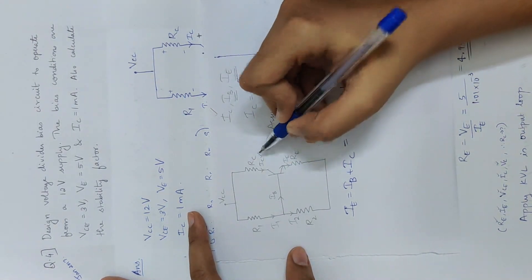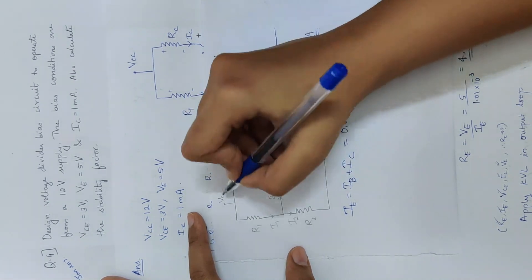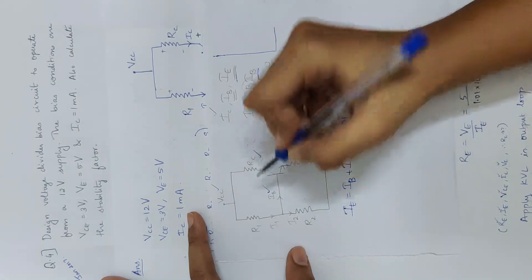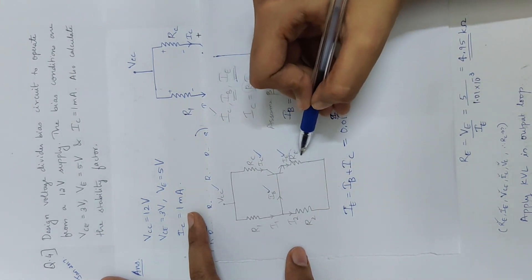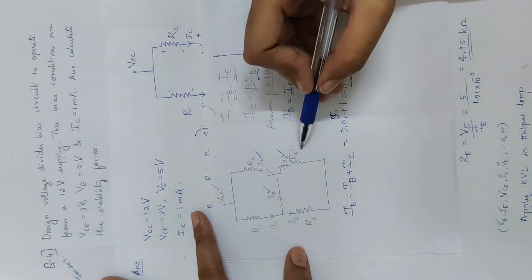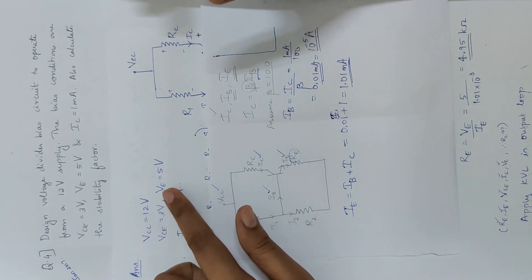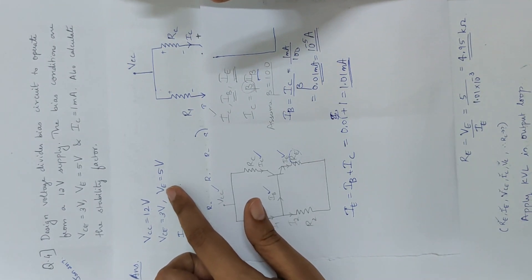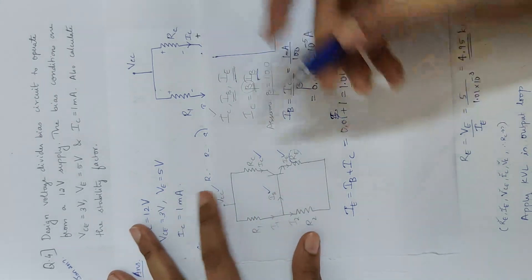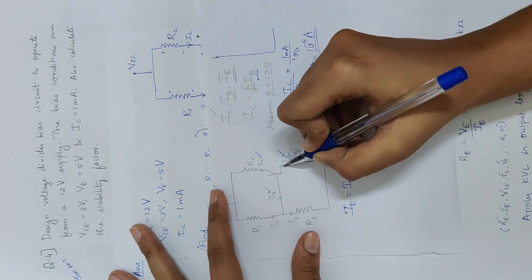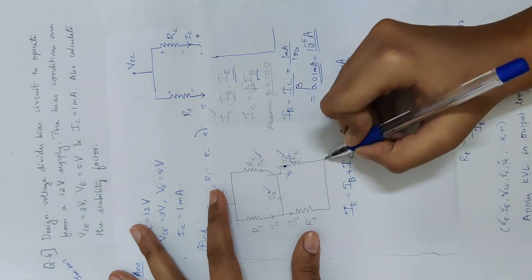Now we have the collector current and emitter current. We need to get the RE value. The given data includes the emitter voltage VE equal to 5 volt. The emitter terminal is the point of VE.